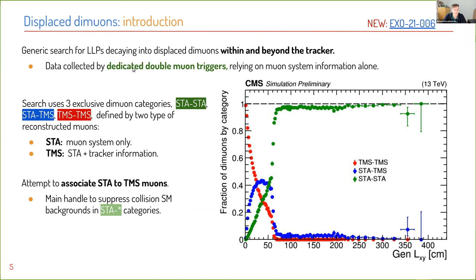This analysis uses a dedicated double-muon trigger relying only on muon system information alone. We define three exclusive dimuon categories using two types of reconstructed muons: STA muons that rely on muon system information alone, and TMS muons that further include tracker information. These categories complement each other in terms of LXY coverage — at the largest displacement, dimuons are made of pairs of STA muons in the muon system; at small LXY, these are dominated by TMS dimuons in the tracker. There's also a hybrid solution where exactly one of the muons is reconstructed in the tracker.